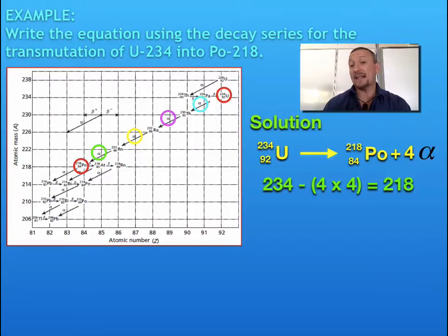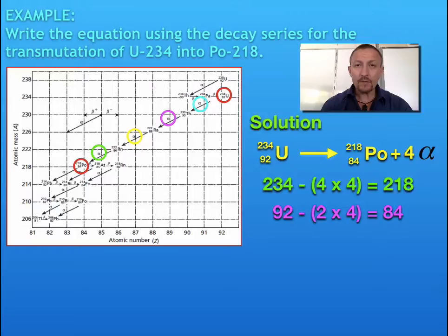Then we look at the atomic number: we've got 92, which is our uranium, and we've lost 4 lots of 2 on its atomic number. Remember, alpha particle is 4, 2 for the helium nucleus, so that's 8. So 92 minus 8 gives me 84. I then use my periodic table if I didn't know what the element was, but because we're working on the graph, we know that 84 is polonium, so everything matches up.